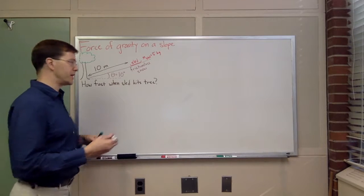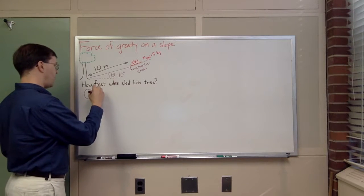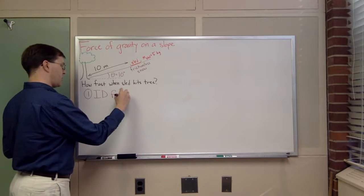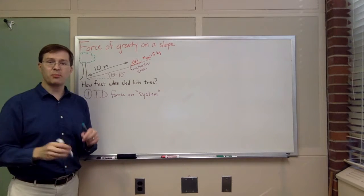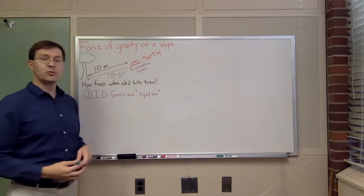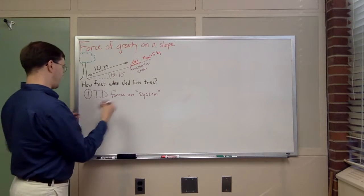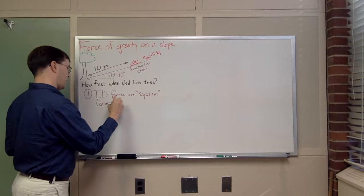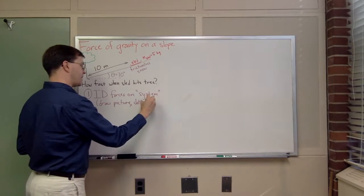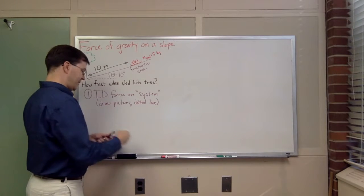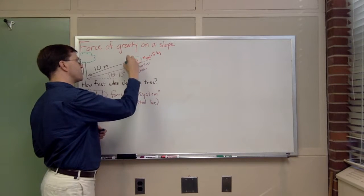Step one in our force problem-solving strategy is always to identify the forces on our choice of system. For this scenario, the system we care about is the sled. I always draw a picture first — it's really helpful. And I will draw a dotted line around the system of interest, around the sled, to separate my choice of system from the environment.